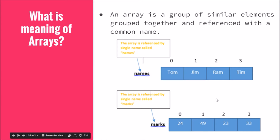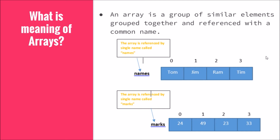Similarly, here we have integers 24, 49, 23, and 33, grouped together and referred with a common name called 'marks'. So these are both examples of arrays in Java. The concept common to both array and ArrayList is the grouping of objects and having a common name so that they can be stored or referred with that name.